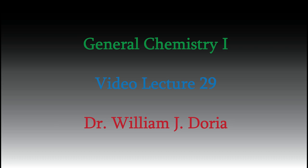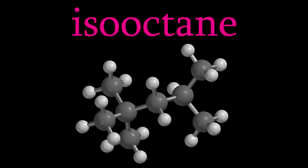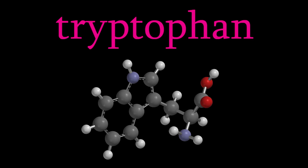You might think that the hardest structures to draw would be large ones. For instance, iso-octane, which is one of the compounds in gasoline, or the amino acid tryptophan. But the Lewis structures of those molecules are actually pretty easy to draw.